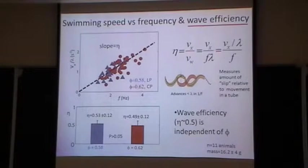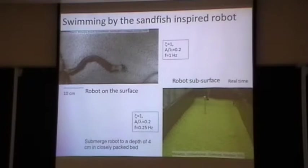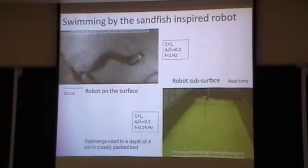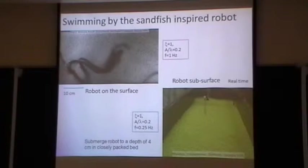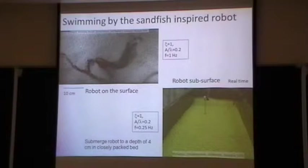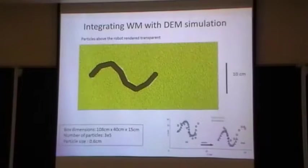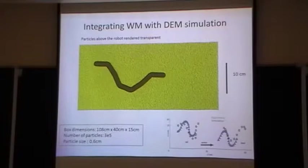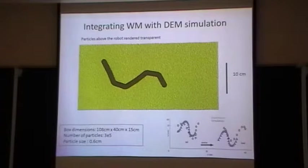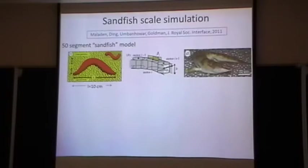For intuition: zero wave efficiency would mean the animal is beating itself in a vacuum and going nowhere, and one would mean it's swimming in something like cork — essentially advancing two of its own body lengths per undulation. We were able to make a physical model of this animal with six servo motors that we control to mimic the observed kinematics, and it was able to swim beneath the surface with performance comparable to the organism, as verified in our computer simulation.